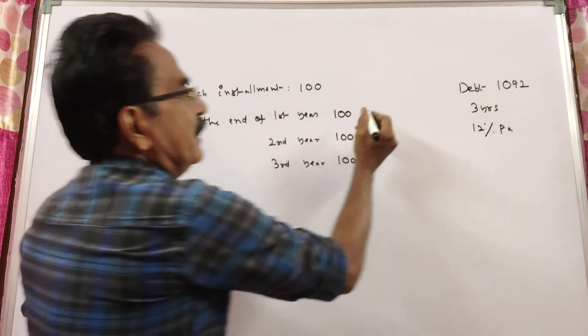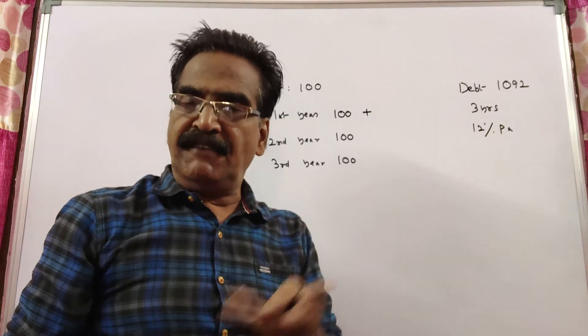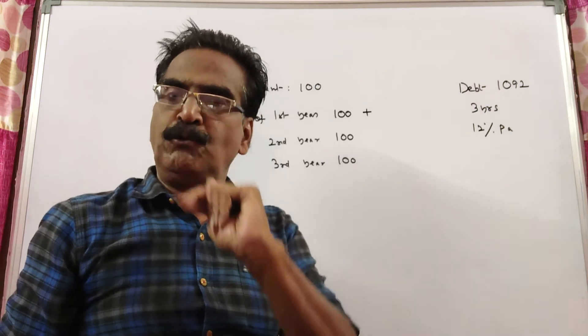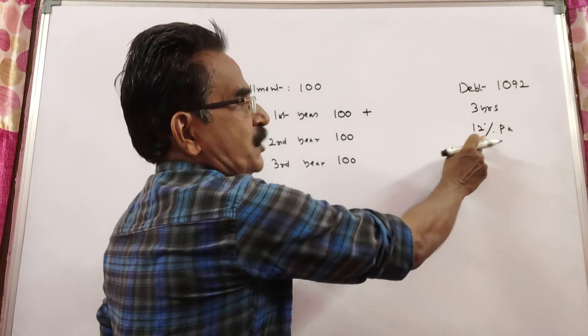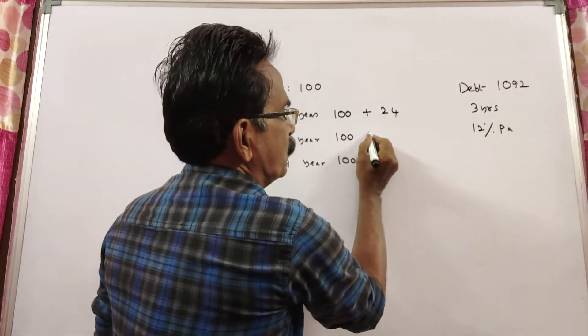See, the installment you pay at the end of the 1st year will fetch interest for 2 years. Here, the interest rate is 12% per annum. For 2 years, the interest will be 24 (2 times 12).